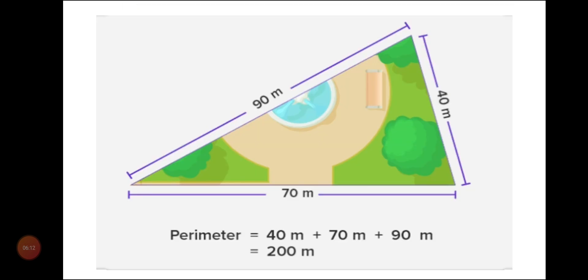Here is one more example — a triangular park in a city. This park is triangular in shape. To find the perimeter of this park, measure all three sides and add them. The first side is 90 meters, the second side is 70 meters, and the third side is 40 meters. Adding them: 40 plus 70 plus 90 equals 200 meters. So the total boundary of this park is 200 meters.